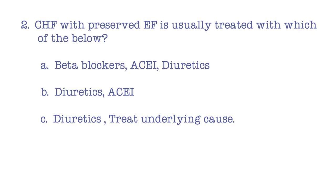Question two: CHF with preserved ejection fraction is usually treated with which of the following? A) beta blockers and ACE inhibitors; B) diuretics and ACE inhibitors; C) diuretics and treat the underlying cause. The answer is C — diuretics and treat the underlying cause.